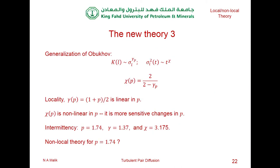We can convert this into a generalized Obukov hypothesis — the mean squared separation to some power chi. Note that gamma_P in the pure local theory is linear in P, meaning small changes in P produce small changes in gamma. But chi is non-linear, so we can expect bigger changes there. In particular, for P equals 1.74, the difference from three is quite large. A key question is what the non-local theory will give us — and that's a question we need to address through simulations.